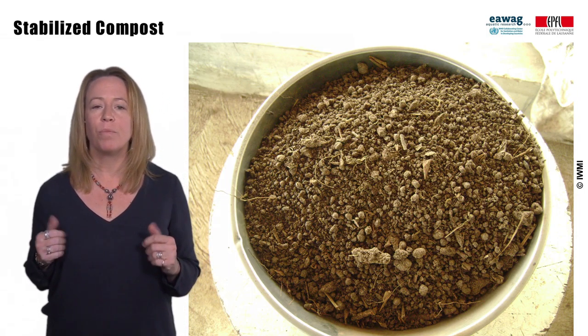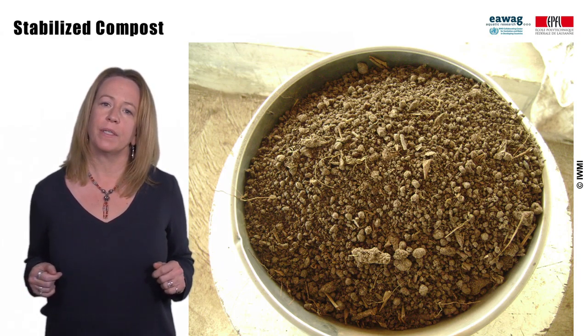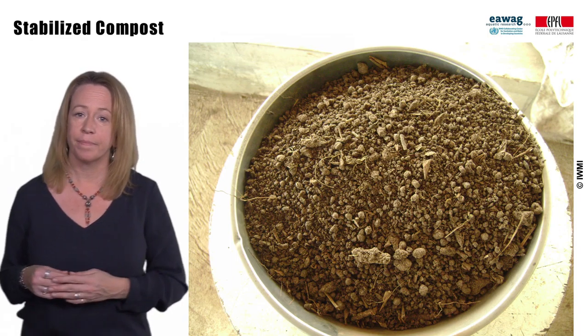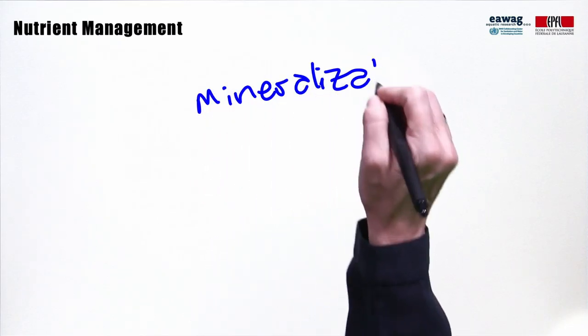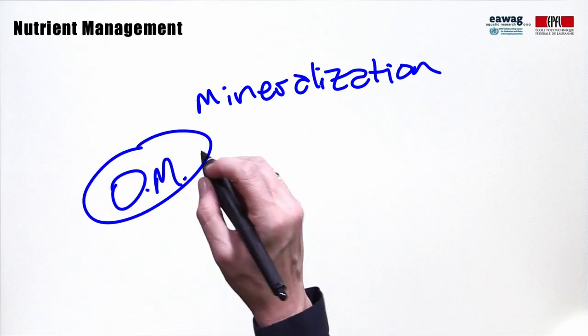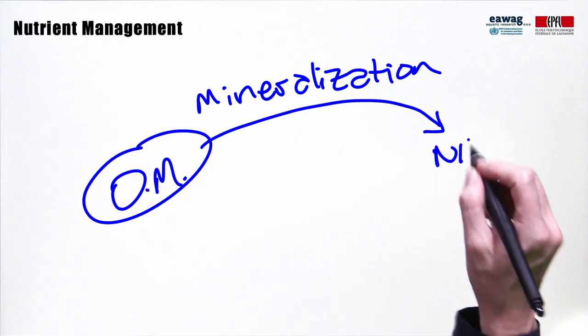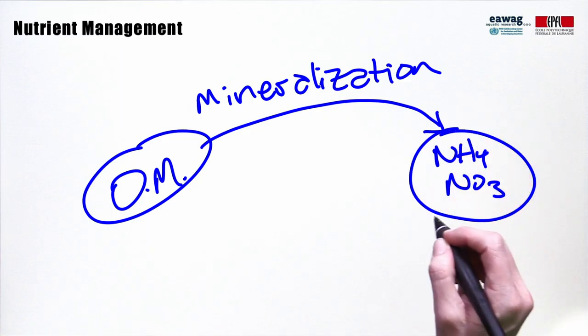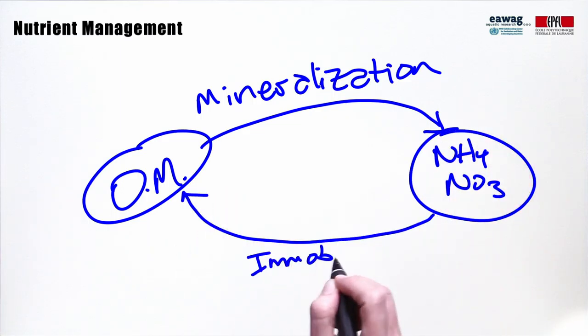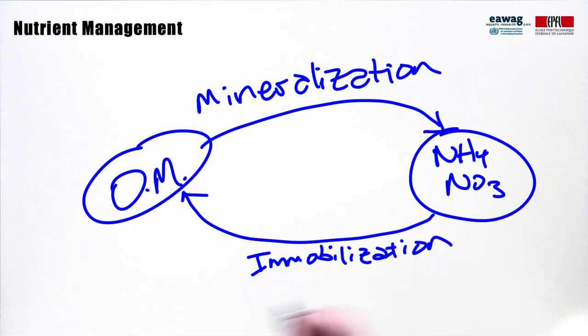Stabilization can be achieved through multiple types of aerobic and anaerobic treatments, for example, composting. Nutrient management can also be achieved through biological treatment, for example, through the mineralization of organic matter as it is degraded, releasing nutrients into the environment, or through the immobilization of nutrients as they are taken up during growth into new cellular material. Further information on the role of biology in nitrogen and phosphorus cycling can be found in the book Fecal Sludge Management.